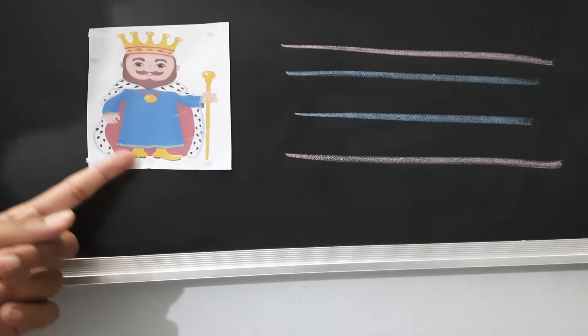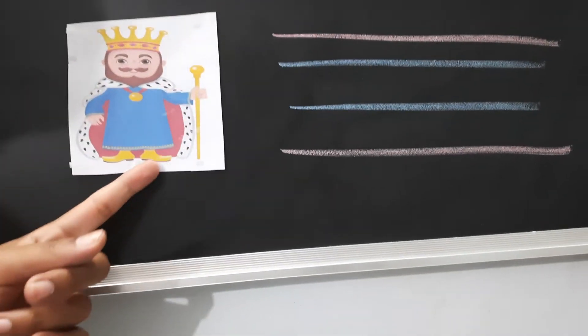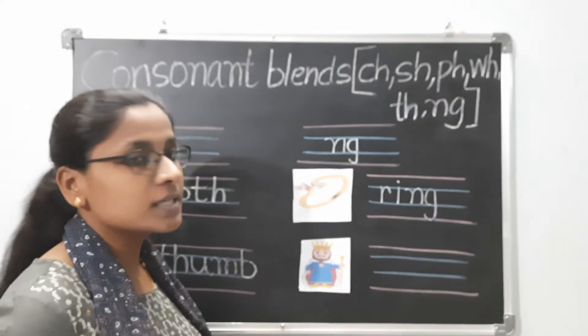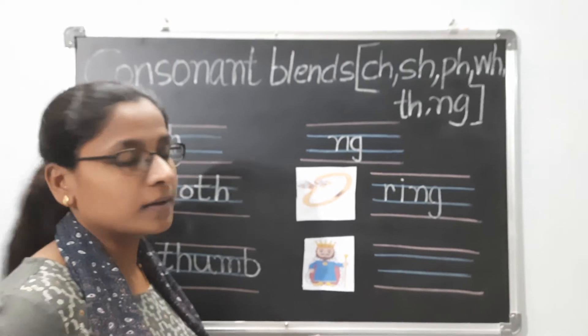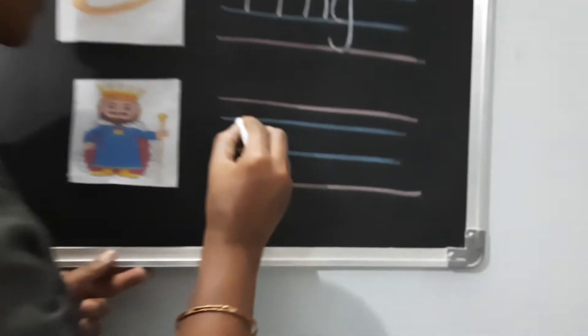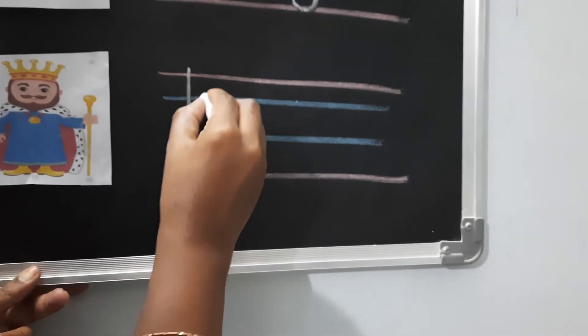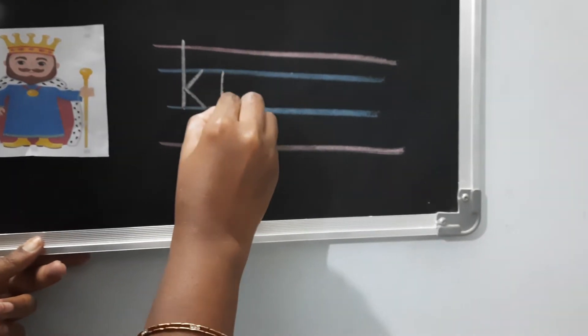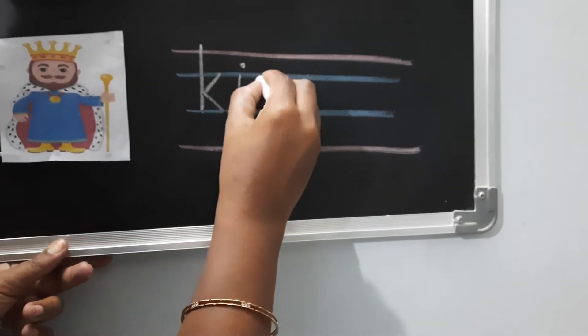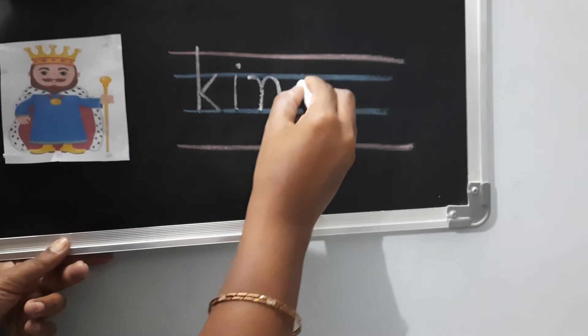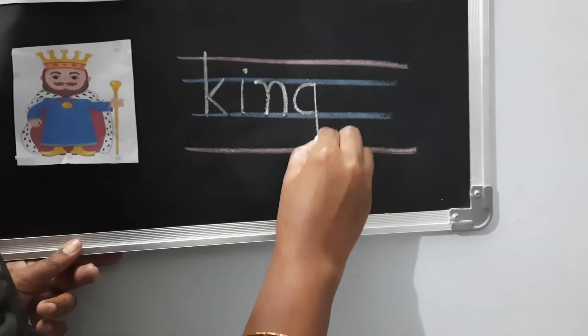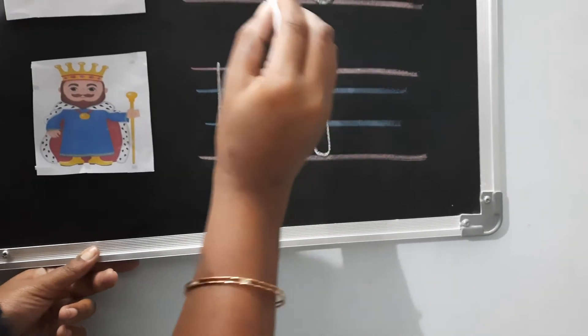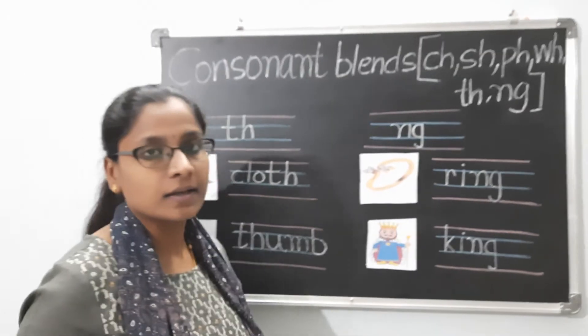What is the second picture we have here? The second picture is king. So it is ending with the blend NG. K-I-N-G. King. That is ending with the blend NG.